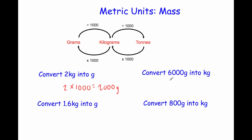Our next question: convert 6,000 grams into kilograms. To convert grams to kilograms we divide by 1,000. So 6,000 divided by 1,000 equals 6, so the answer is 6 kilograms.